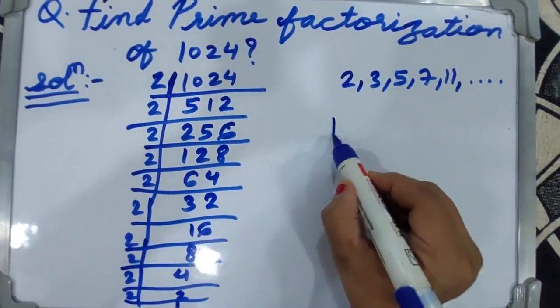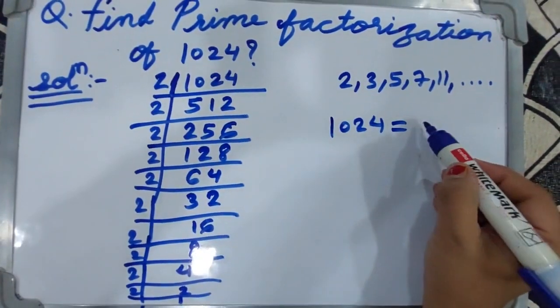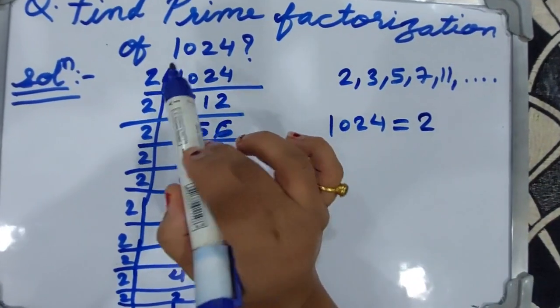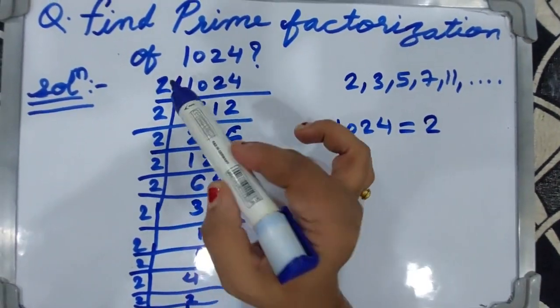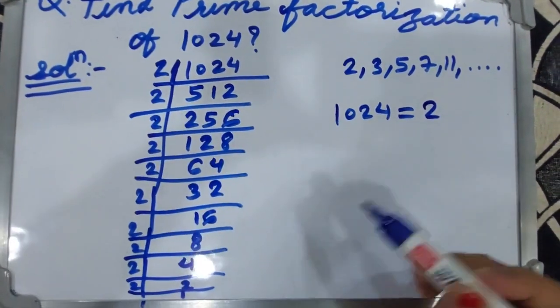Then you can find the prime factorization of 1024. Then what is the answer? 2 is common. Then how many twos are there? 1, 2, 3, 4, 5, 6, 7, 8, 9, 10.